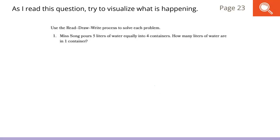Starting off with our first question today. As I read this question, try to visualize what is happening. Page 23, we have number 1. Miss Song pours 5 liters of water equally into 4 containers. How many liters of water are in 1 container? As I read each part of this question, think about what we can draw. Miss Song pours 5 liters of water equally into 4 containers. Here, I know that we have 5 liters of water, which means that I have a dividend of 5.